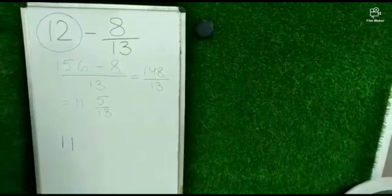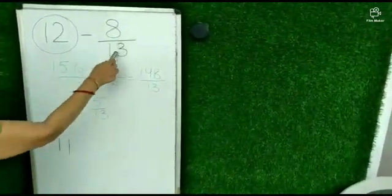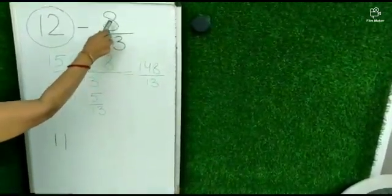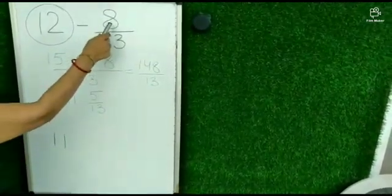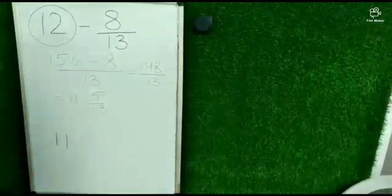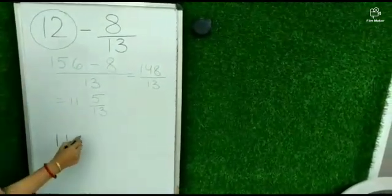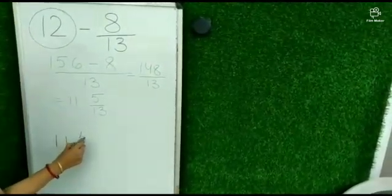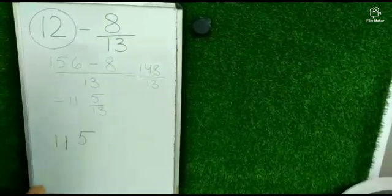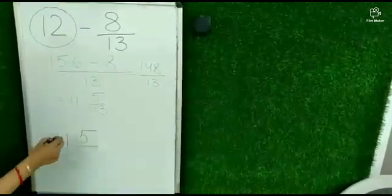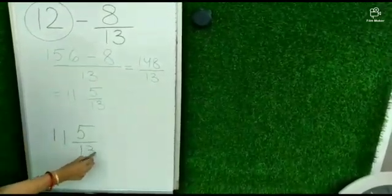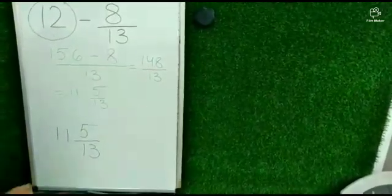Now second step, you subtract numerator from denominator. That is, we will subtract 8 from 13. What is the answer? 5. So we will write 5 as a numerator, and denominator will always be the same, that is 13. See, we got the answer in one second.